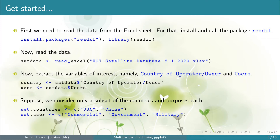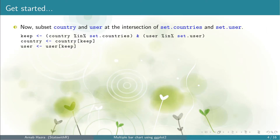To do that, first we create two vectors set.countries and set.user, where set.countries includes the two elements USA and China, while set.user includes three elements: commercial, government, and military. Next, to restrict ourselves to the different combinations of set.countries and set.user, we create a vector keep that will create a subset of all the cases we want to focus on. Then in the second and third lines we keep only the interesting cases of the vectors country and user.